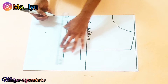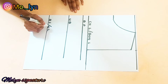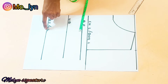So I'll be labeling this as my bust point, here's my under bust, and here's my waistline or my half length. Next I'll be inputting half of my bust part measurement — the nipple-to-nipple measurement — on all the lines I have drawn except for the chest line.